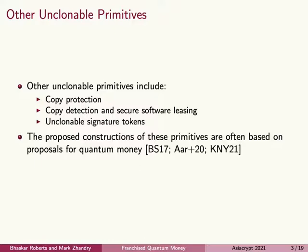Copy detection and secure software leasing are weaker. In this setting, it's possible for the adversary to duplicate the functionality, but if they do that, we can detect it. Finally, unclonable signature tokens can be used to sign a message, but after signing a single message, the signature token becomes unusable. There have been recent proposals to construct these primitives, and many of them are based on techniques developed for quantum money. Our hope is that by improving the techniques for constructing quantum money, this will allow us to construct these other primitives as well.